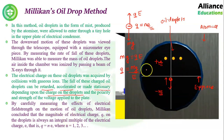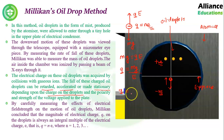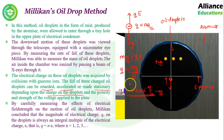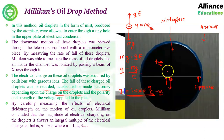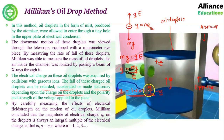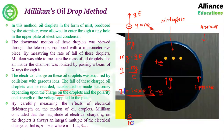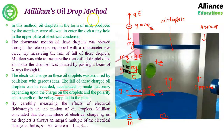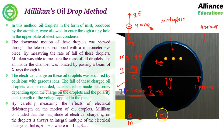Millikan performed the experiment multiple times and got different values of q, but all those values were multiples of one particular value. The lowest value obtained was 1.6 × 10⁻¹⁹, which was considered the value of charge on an electron. For example, if readings come as 6, 9, 15 — they are all multiples of 3, so the lowest value is 3. Similarly, charge = 1.6 × 10⁻¹⁹ C. Since the charge-to-mass ratio was already given, by substituting the charge value, the mass of electron was also calculated. This is how Millikan's oil drop method determined both charge and mass of the electron.